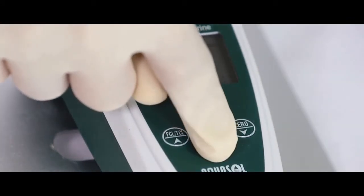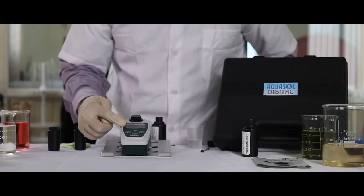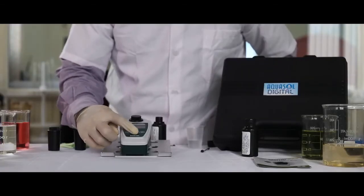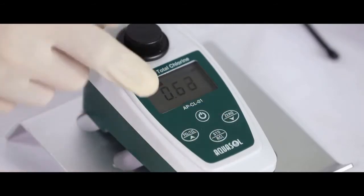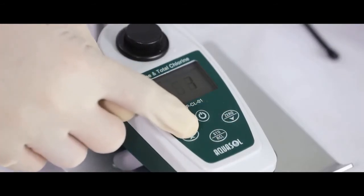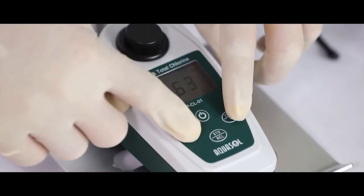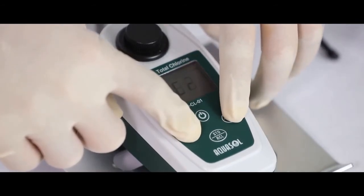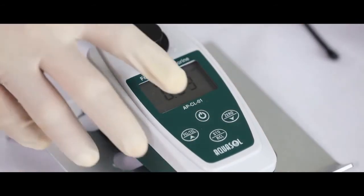Press STO/RCL key to store the readings. To recall the readings, press and hold the same key. Use arrow keys to browse the stored data. Press and hold both the arrow keys together to clear all the stored data.